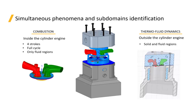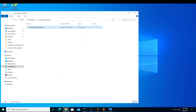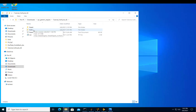The geometry is divided into two subdomains: one subdomain representing the combustion analysis that will be handled by Forte, and a second subdomain that represents the outer case of the engine that will be handled by Fluent.